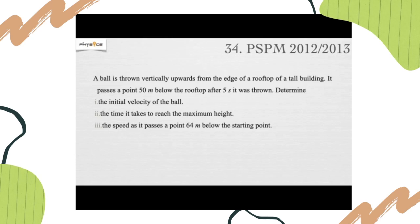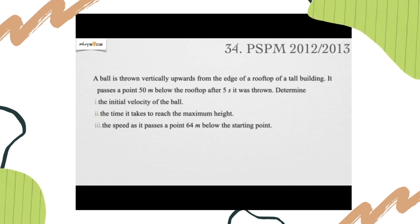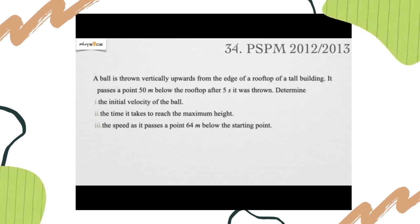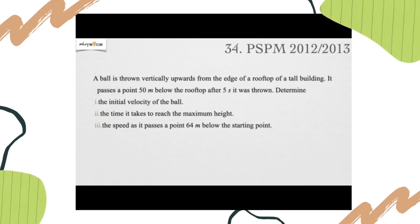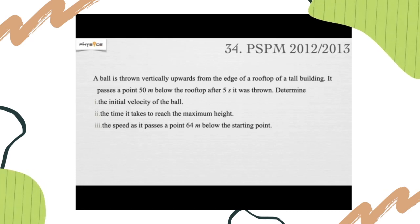A ball is thrown vertically upwards from the edge of a rooftop of a tall building. It passes 0.50 meter below the rooftop after 5 seconds it was thrown. Determine: one, the initial velocity of the ball; two, the time it takes to reach the maximum height; and three, the speed as it passes 0.64 meter below the starting point.